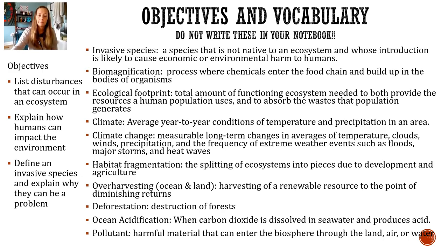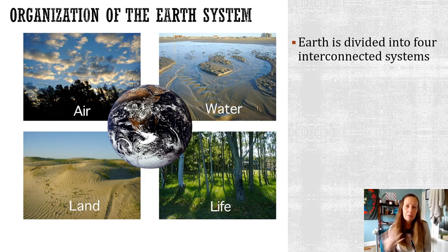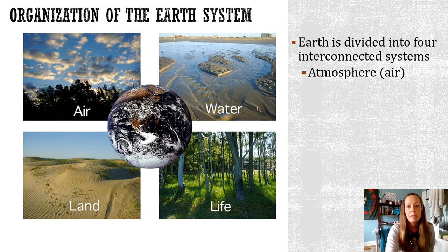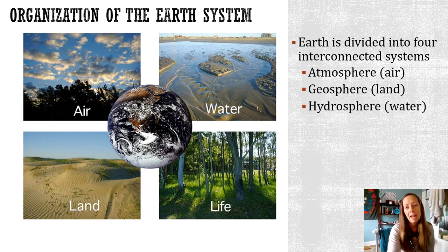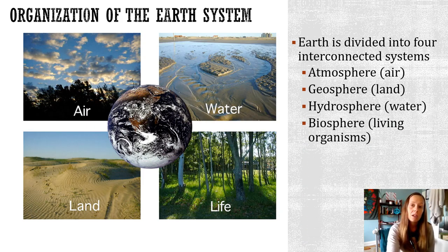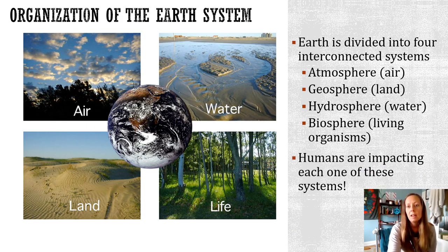First, let's look at the organization of the Earth's systems. Our planet can be divided into different systems, and the four main systems are: air, which would be your atmosphere; geosphere, which is the land; the hydrosphere, which is the water; and the biosphere, which is living organisms. Our book focused on these and organized it in that way.